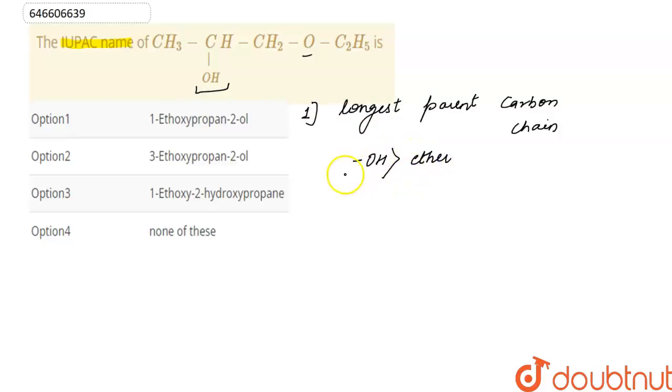So OH acts as a functional group and ether acts as a substituent group. So this is our substituent group. And here this C2H5 is ethyl and there are total three carbon atoms in this chain.